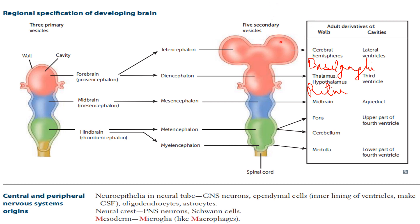Now looking at the cavities: the two lateral hemispheres contain CSF in the lateral ventricles. These drain into the third ventricle, then through the aqueduct, to the upper part of the fourth ventricle — which corresponds to the pons — and then to the lower part of the fourth ventricle, which corresponds to the medulla. The cerebellum is on the opposite side.